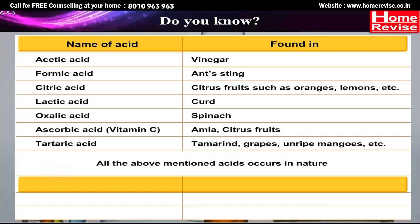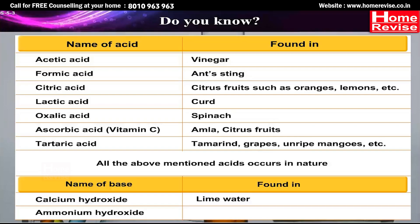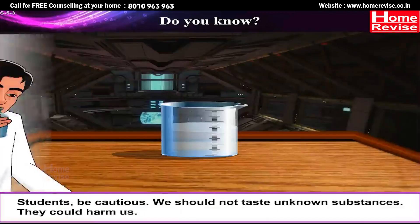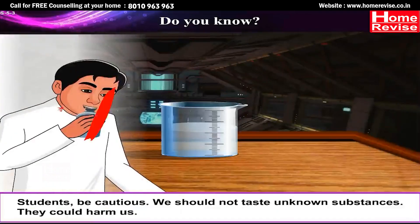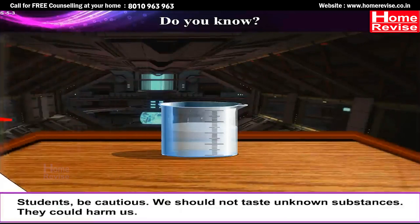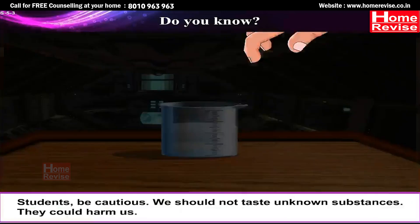Name of the base: calcium hydroxide is found in lime water; ammonium hydroxide is found in window cleaner. Students, be cautious — we should not taste unknown substances as they could harm us.